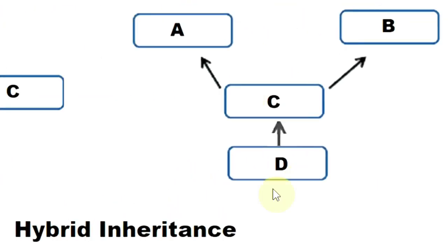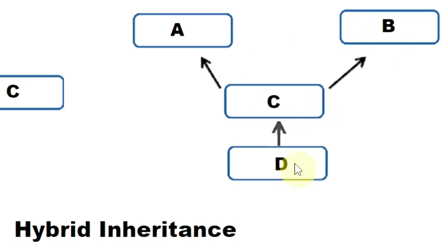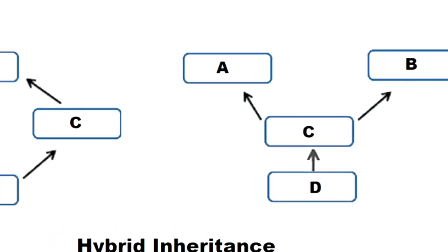There is one more example of hybrid inheritance. Classes A and B are independent classes, and class C inherits these two classes — that is multiple inheritance. This C class is then inherited by another class D — that is multi-level inheritance. So again, mixing of multiple and multi-level inheritance is called hybrid inheritance.